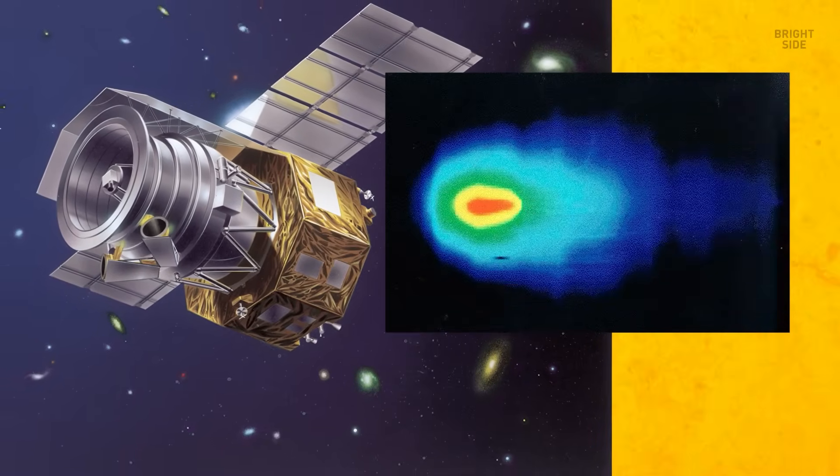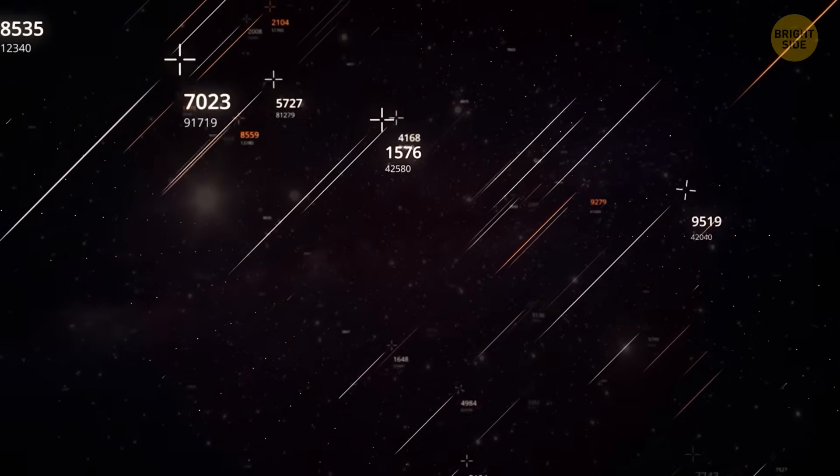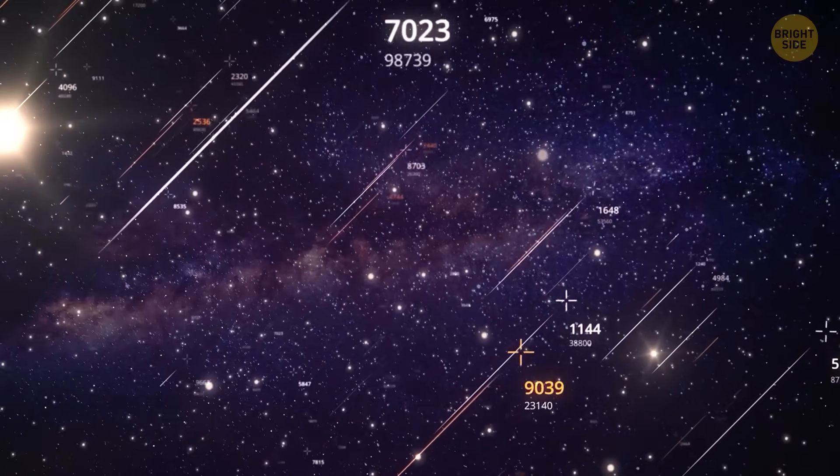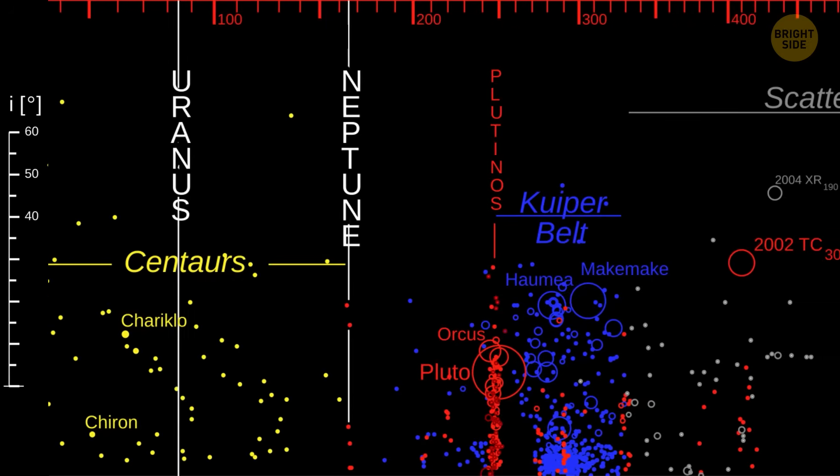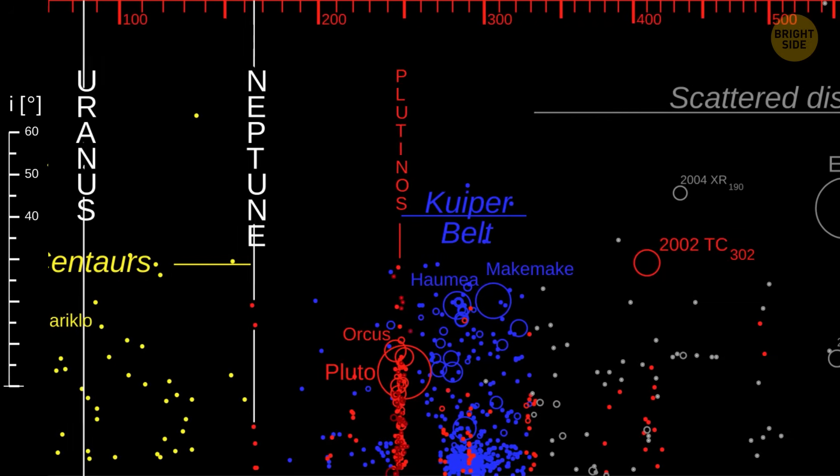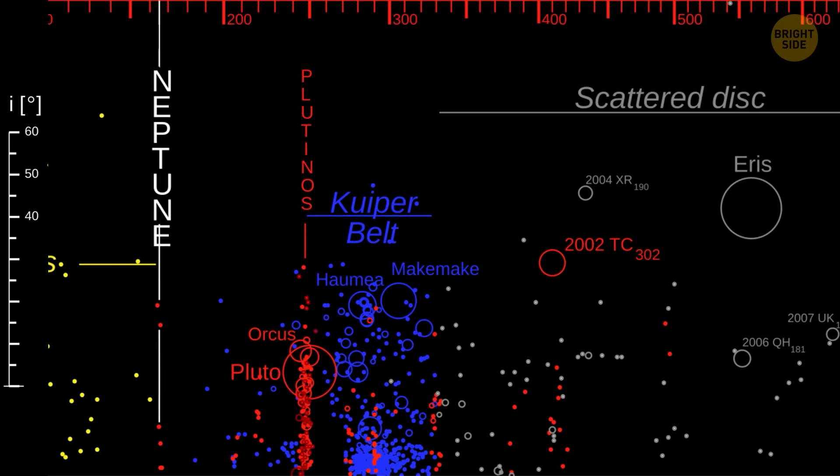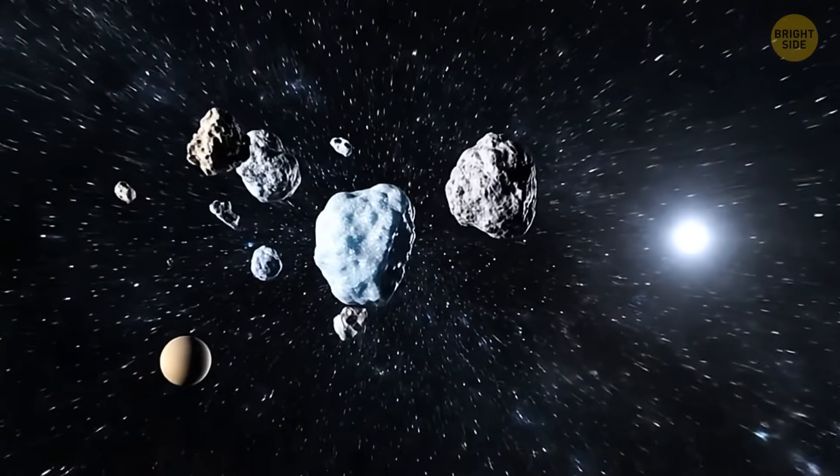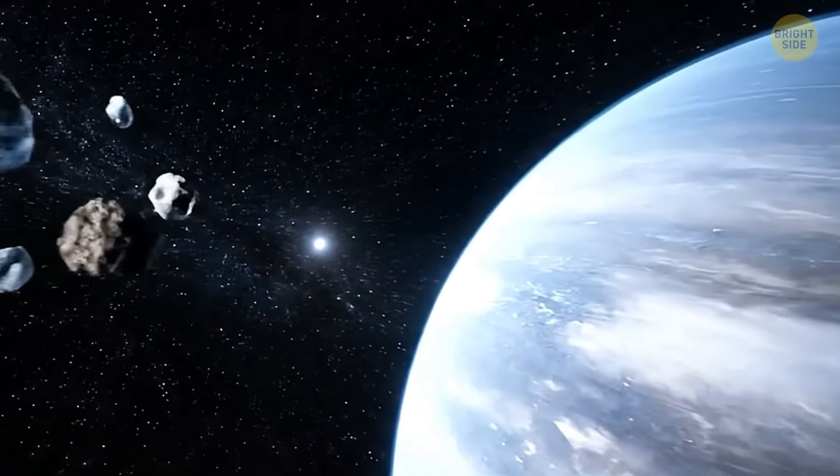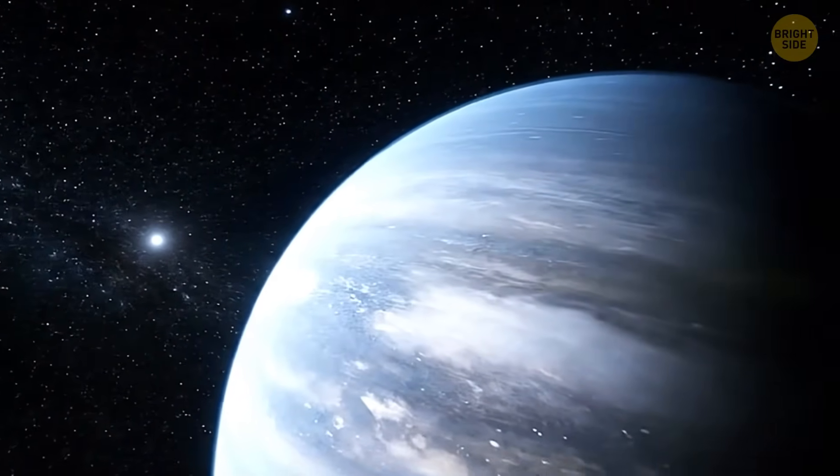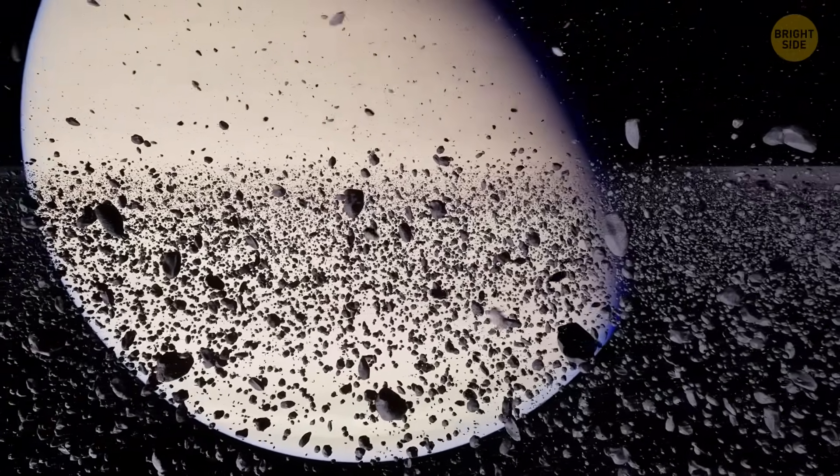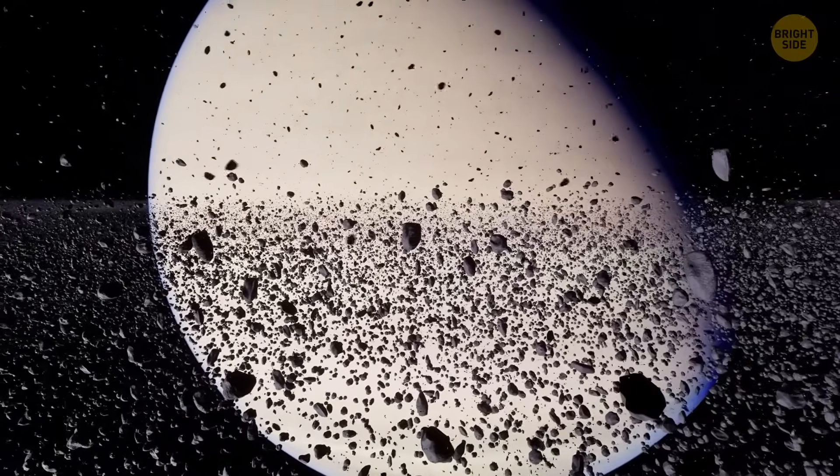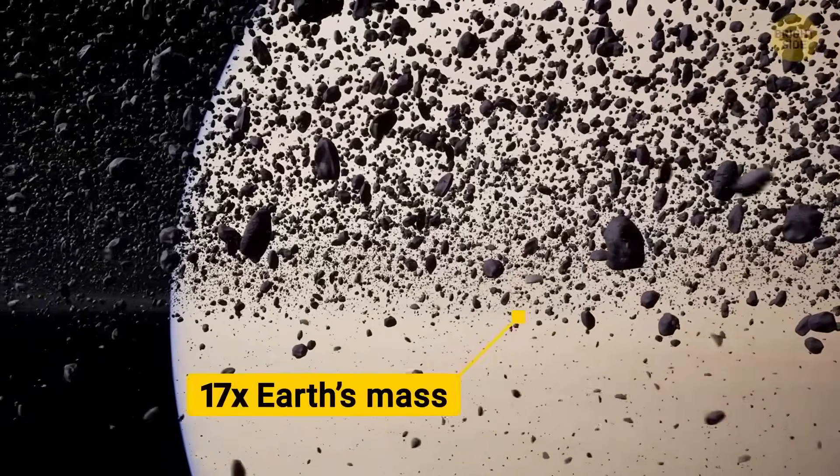They guessed how bright Planet 9 might be and how fast it might move based on how big, far away, and cold it could be. Then they looked for matching blips in the sky that were seen by both IRAS and AKARI, but not in the exact same spot. That's because a real planet would have moved a little over 23 years. Their estimations were based on how far away the object seemed to be, 500 to 700 times farther from the Sun than Earth, and how heavy it might be, which is 7 to 17 times Earth's mass.